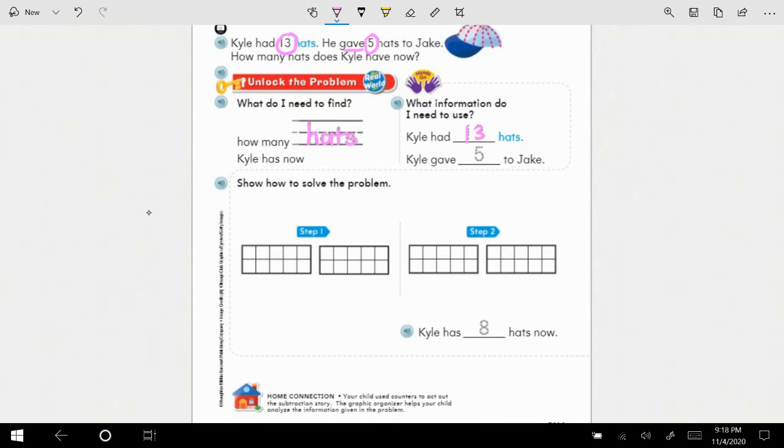So then my question for you is, what is the whole? We're talking about hats, and how many Kyle has now, and the whole is the number Kyle started with, it was 13. So we're going to come here to step one, and we are going to show 13 hats. Now, what does 13 mean? It means a group of 10 and three more. So I'm going to quickly show my group of 10.